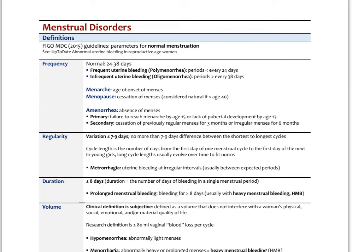A normal frequency of menses would be every 24 to 38 days. Frequent uterine bleeding or polymenorrhea are periods less than every 24 days. And infrequent uterine bleeding, also known as oligomenorrhea, are periods greater than every 38 days.